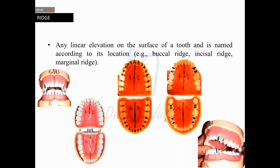The basic definition of a ridge is that it is a linear elevation seen on the tooth surface, named according to its location. For example, there is an elevation on the labial aspect of the canine referred to as the labial ridge, and an elevation on the lingual aspect referred to as the lingual ridge. We also see marginal ridges at the borders of molars and anterior teeth, triangular ridges prominent in posterior teeth, and a buccal ridge on the premolars.